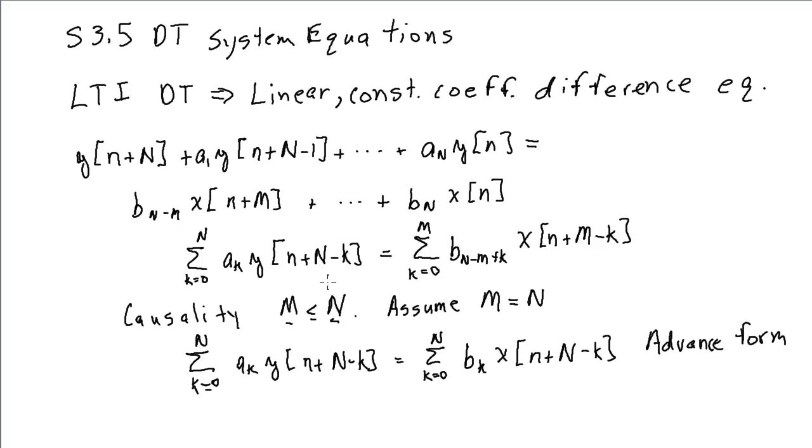We can also write this difference equation in what's known as the delay form with a change of variables where we let M equal N plus N. Now our leading coefficient becomes Y of M instead of Y of N plus 1, and then we'll have A1 Y of M minus 1, which is now the previous output.